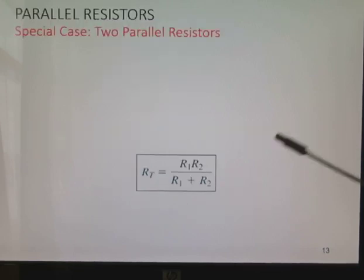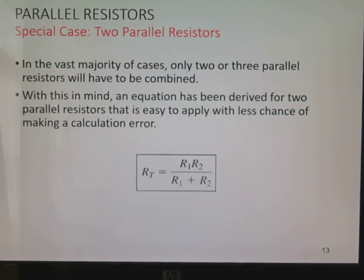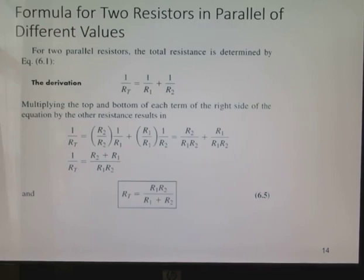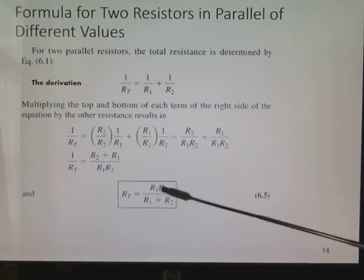You can use this formula for special cases when there's only two resistors in parallel and predominantly that's the case. So you have two resistors in parallel. You multiply the numerator and you add the denominator and you divide the two. That is determined by this derivation that's in your textbook. They started off with 1 over RT and they found a common denominator and rearranged algebraically to find RT.